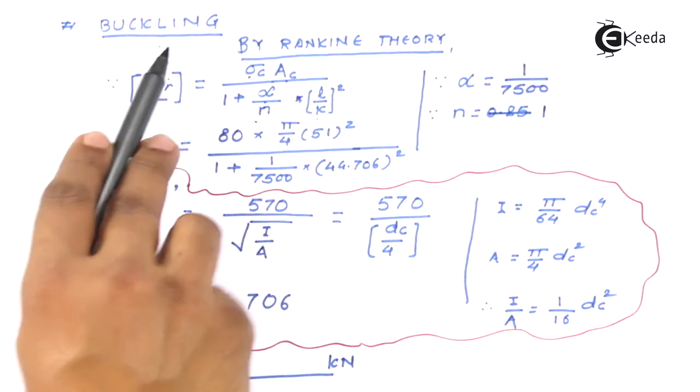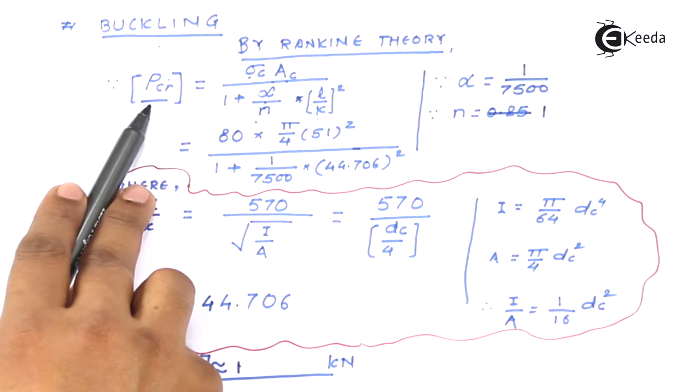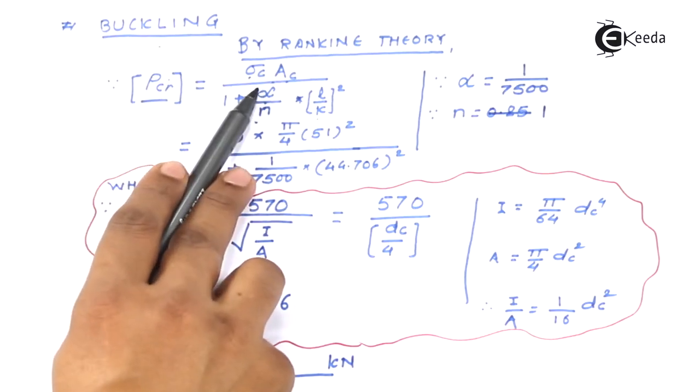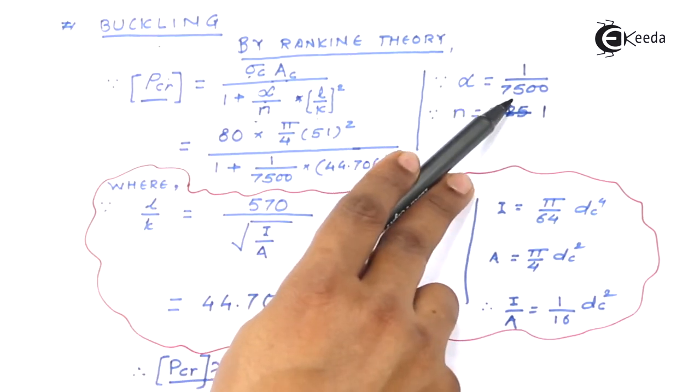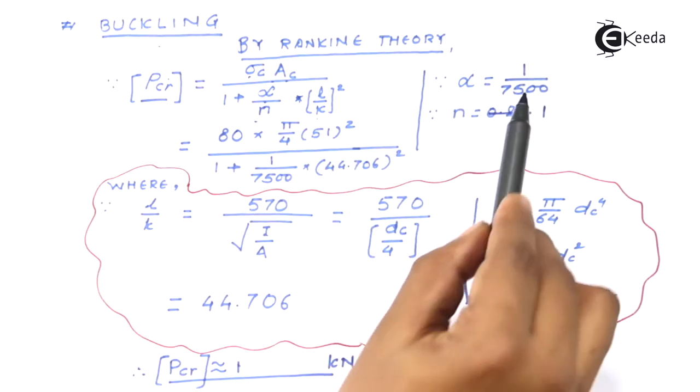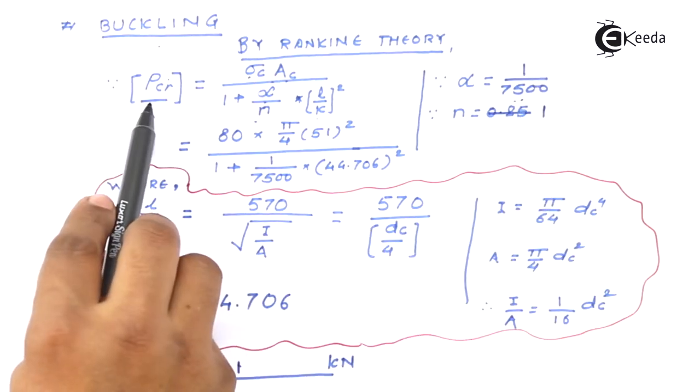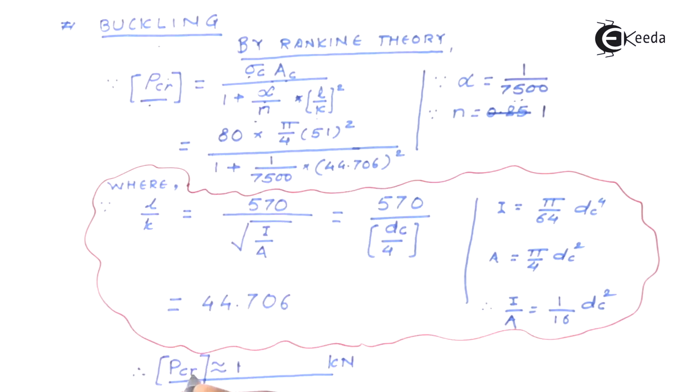By Rankine's theory we know that buckling will be given by this critical load. Now let us assume the critical load as the allowable, so the formula is same as that we have used before. The value of n in our case is 1, the value of alpha is 1 by 7500 because it's a ductile steel material. Value may marginally change but will not hamper the value of critical load as such and that's why after substituting the values we'll get the answer.